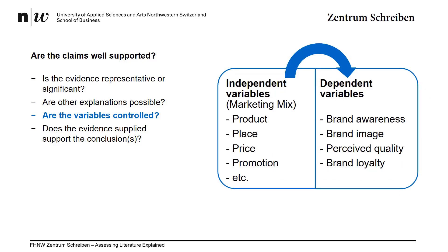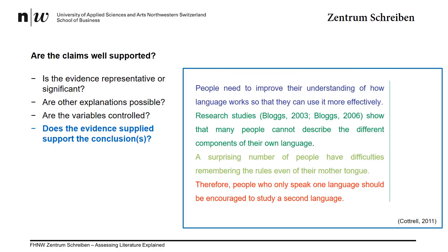In a study, the dependent variables are the ones being tested and measured, such as brand awareness, brand image, perceived quality, or brand loyalty. The independent variables, such as the ones in the marketing mix, are the ones that are changed or controlled. You want to control and perhaps adjust the independent variables to see if the changes you implement have an effect on the dependent variables.